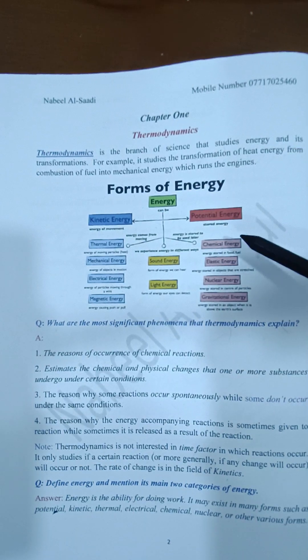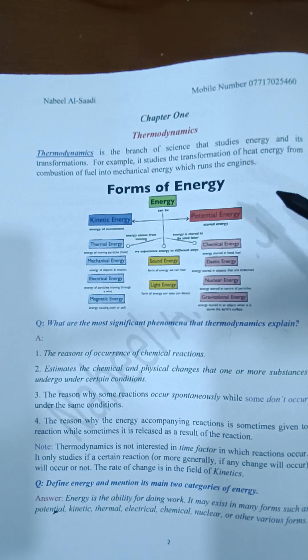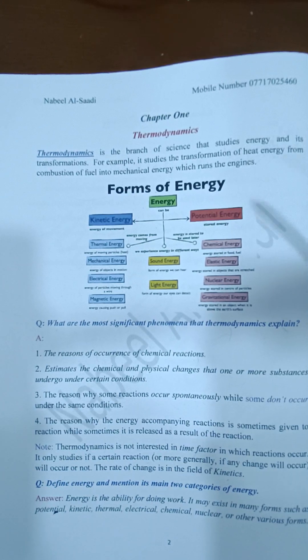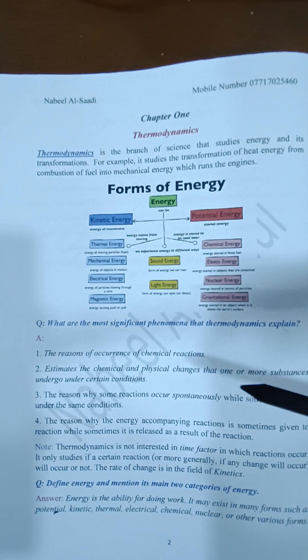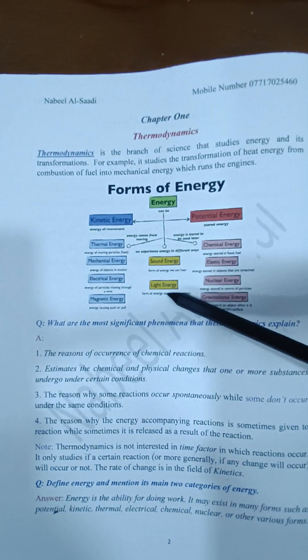Under potential energy, we have chemical energy, which is the energy stored in food and fuel and other chemical compounds. We have elastic energy, nuclear energy, and gravitational energy. We have also sound energy and light energy.